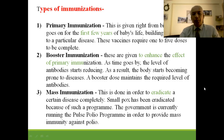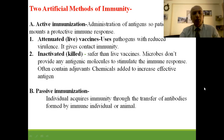Two artificial methods of immunity: First is active immunization, where administration of an antigen is given to the patient to provoke the immune response. It is done by two ways — live vaccine (also known as attenuated vaccine), which uses pathogens with reduced virulence and gives rise to contact immunity. Second is killed vaccine, which uses inactivated microbes.